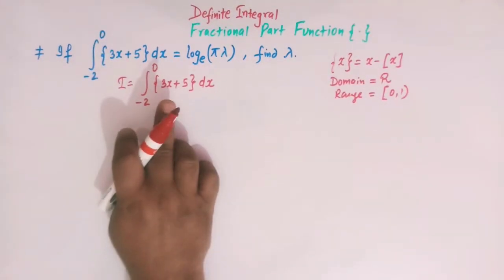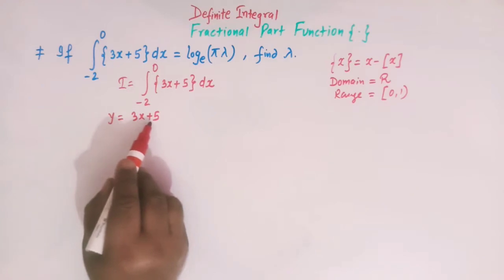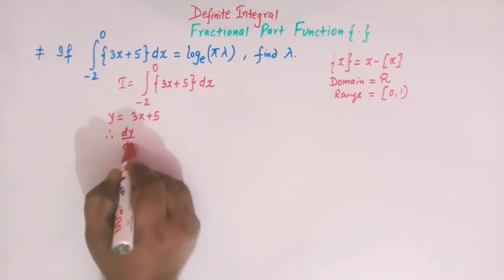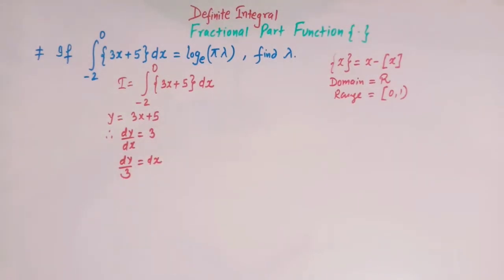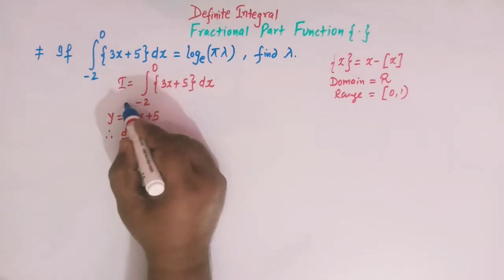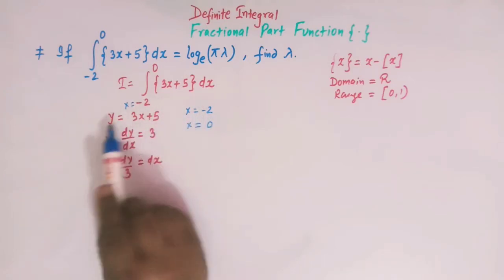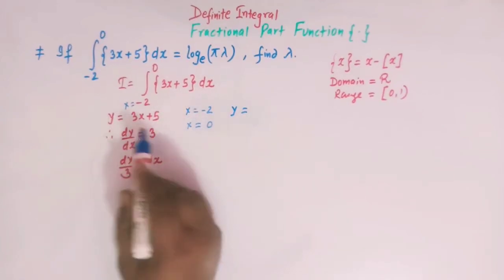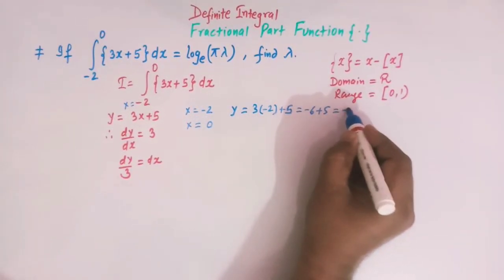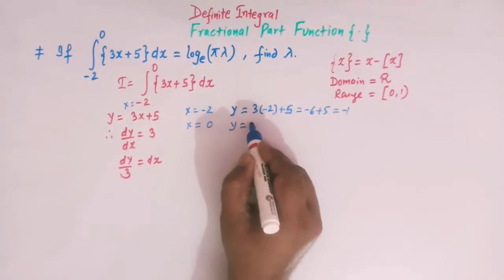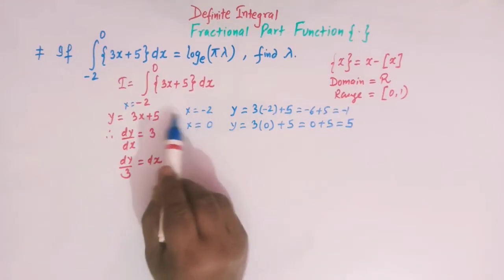Now let us apply substitution to this integral. Let y equal 3x plus 5, so dy/dx equals 3, and therefore dx equals dy/3. Since x varies from minus 2 to 0, we change the limits accordingly: when x is minus 2, y equals 3 times minus 2 plus 5, which is minus 6 plus 5, that is minus 1. When x is 0, y equals 3 times 0 plus 5, that is 5.